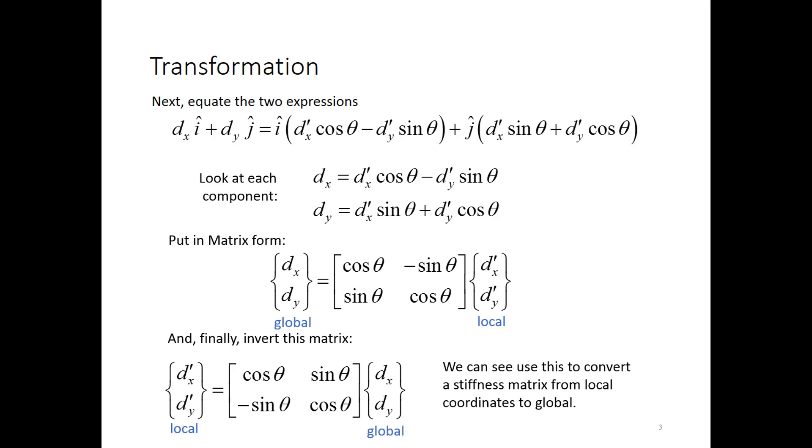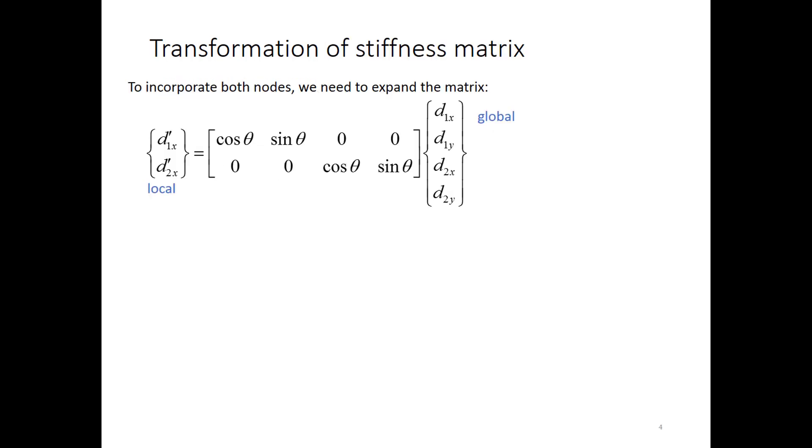So this is how we're going to convert a stiffness matrix. We're going to use these transformation matrices. The approach is, first of all, we expand out the matrix to account for the fact that we have two nodes in each element. And in this case, we end up with the oblong matrix you see here, because the global coordinate system for a bar element has four degrees of freedom. The first node can translate in the x and y direction, and the second node can translate in the x and y direction. Whereas in the local coordinate system, the bar element simply has one degree of freedom at each node, and it's oriented along the local x coordinate.